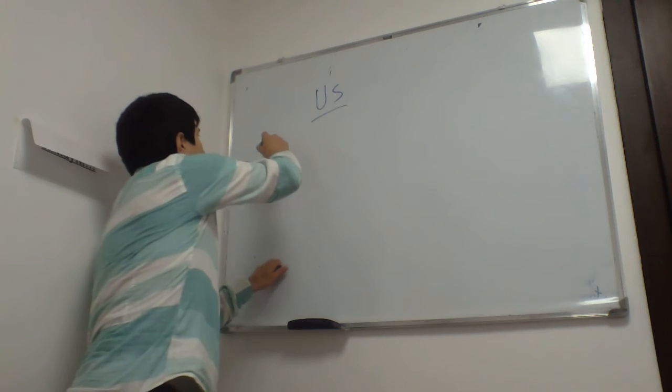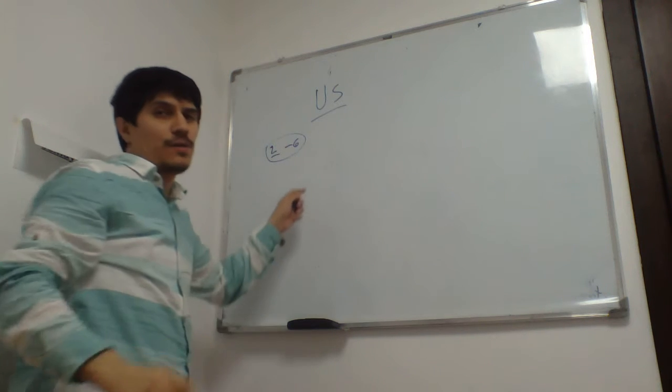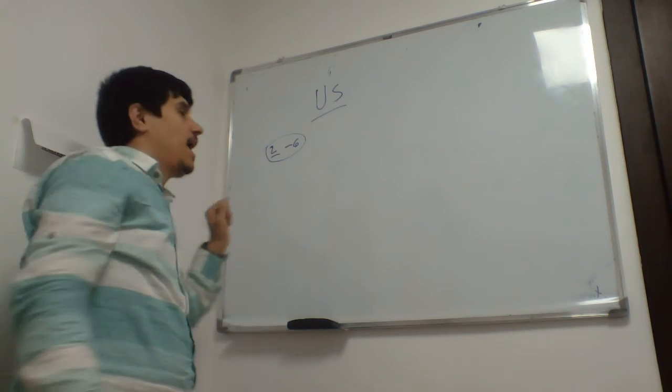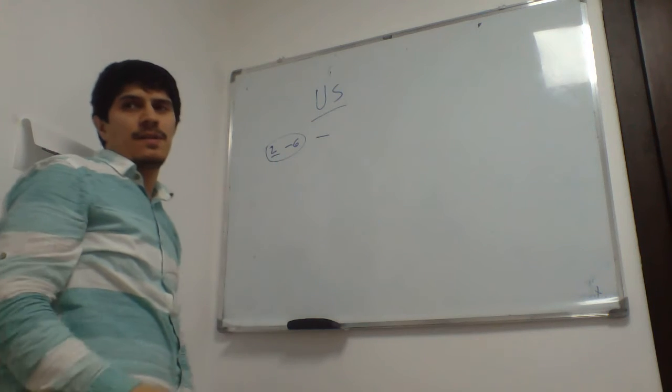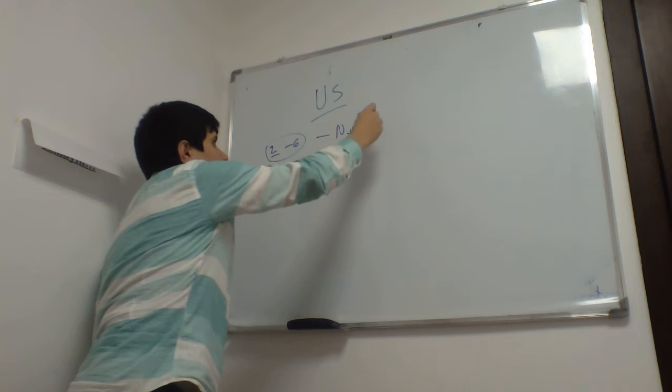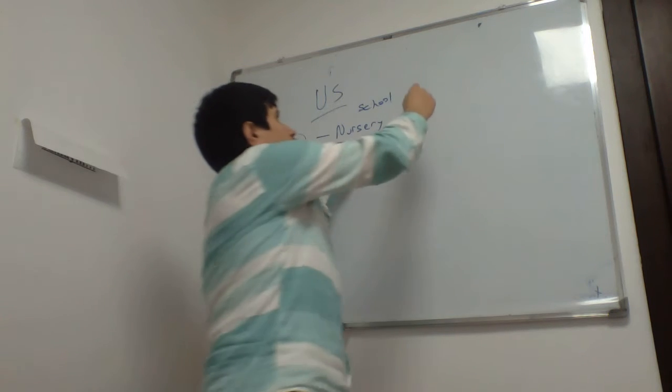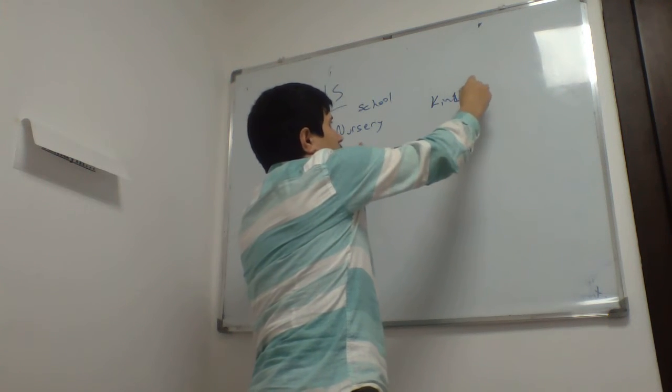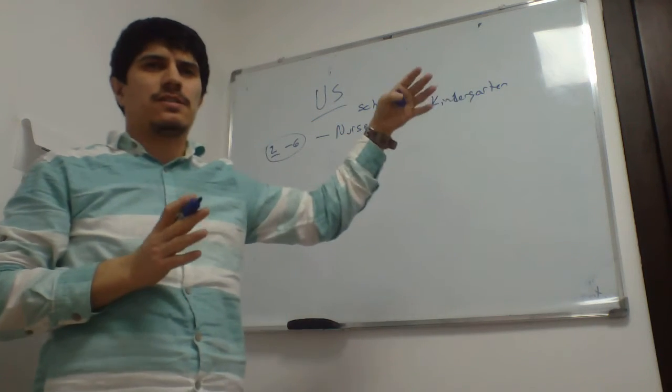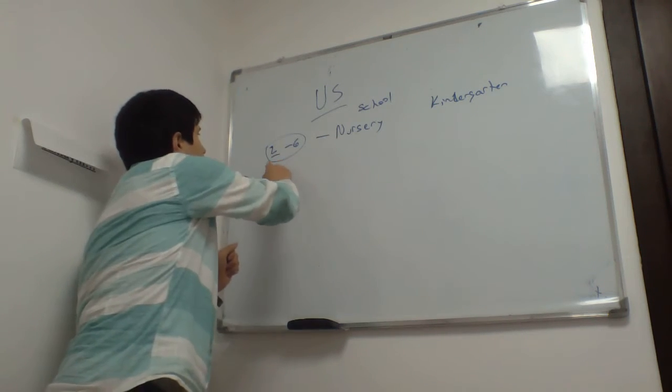We start education from two to six years. What kind of school do we go to? The university? Absolutely not. It's nursery school. It's also called kindergarten, but in the United States we generally prefer using nursery school because kindergarten I think is derived from Germany.